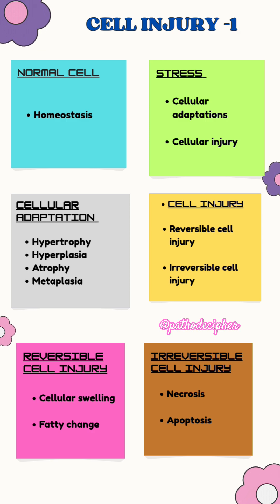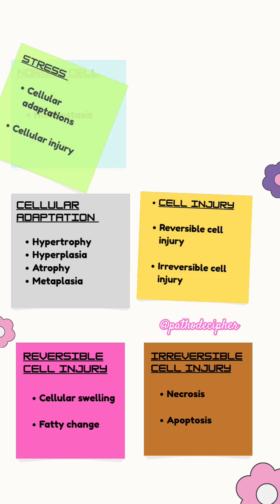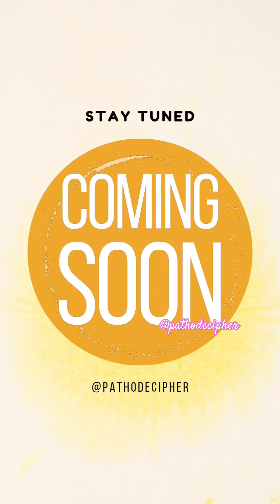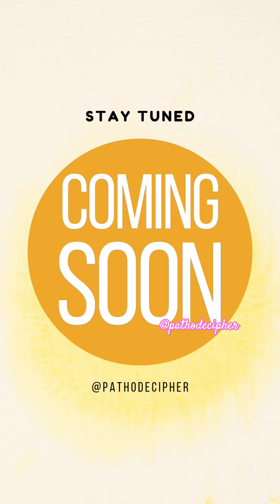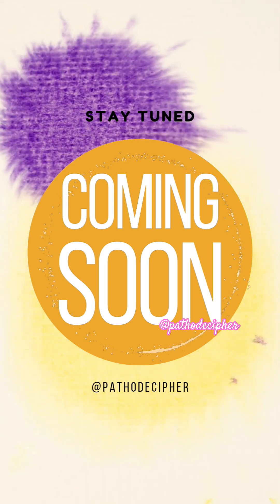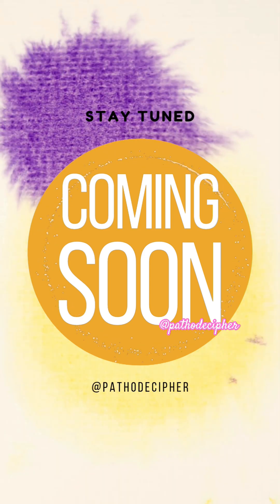In irreversible cell injury, you have two: necrosis and apoptosis. So these are the quick concepts about cell injury. We'll see in the next class with the upcoming full lecture about cell injury. Until then, stay tuned — bye bye.